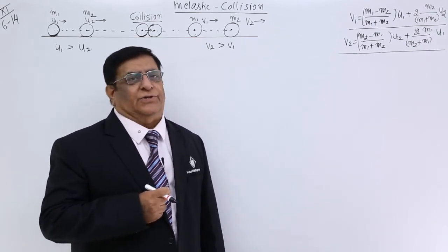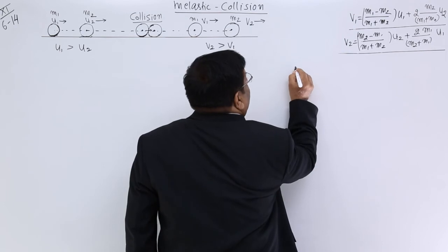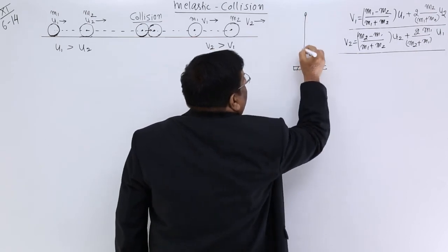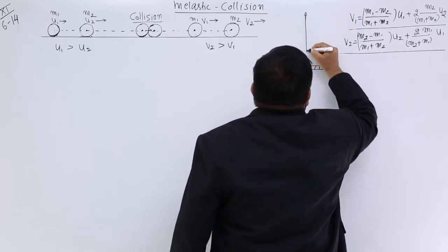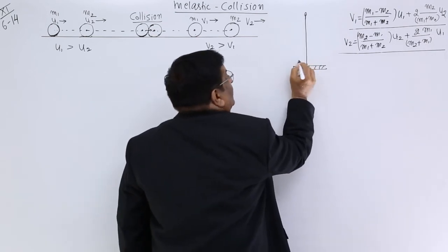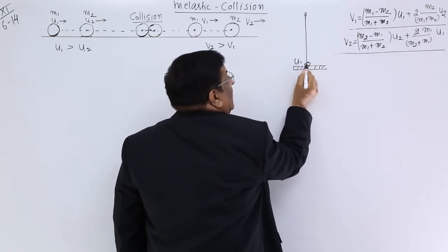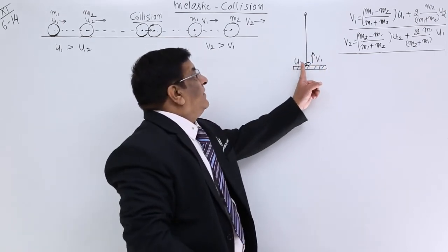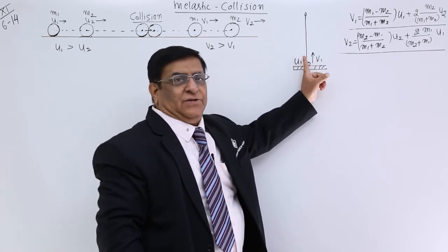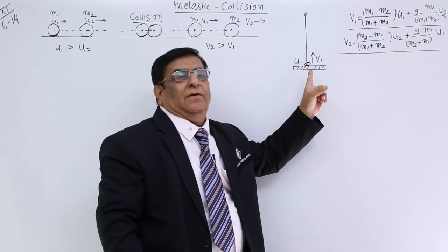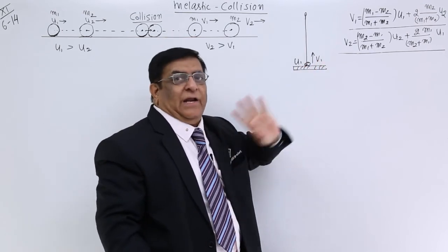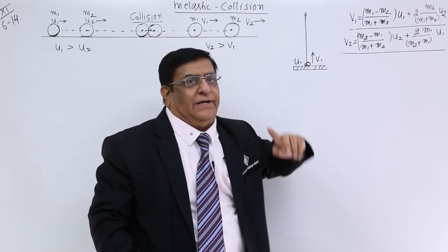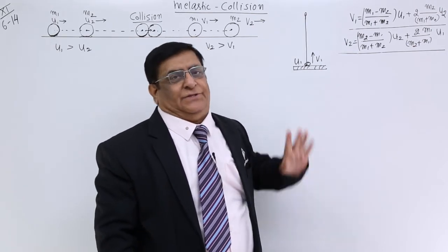We will now study inelastic collision. This is the ground — a ball strikes here and when it falls, it has a final velocity U1, and after the collision, it rebounds back with velocity V1. If U1 and V1 are equal, we say it is an elastic collision. But if V1 is less than U1, there are losses of kinetic energy, and that is inelastic collision.